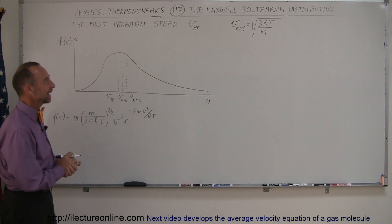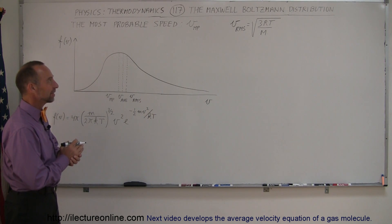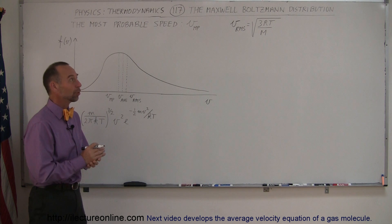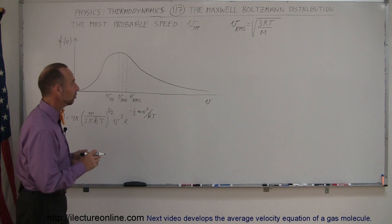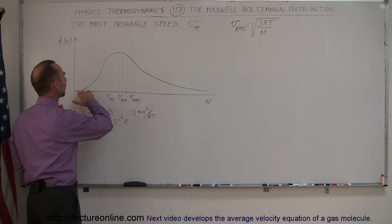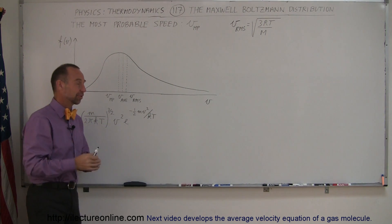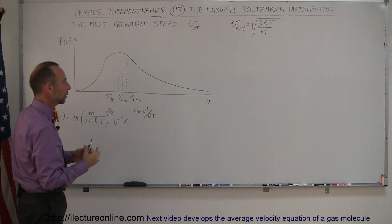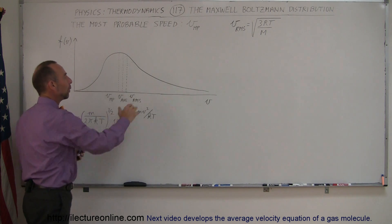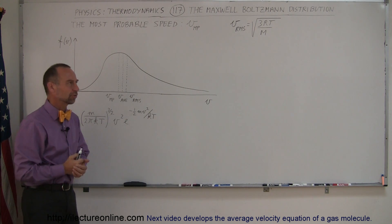Welcome to Electra Online and our next topic in thermodynamics is the Maxwell-Boltzmann distribution. This is the distribution of the velocities or speeds of molecules in any environment, for example in the room or in a box, doesn't matter where it is.